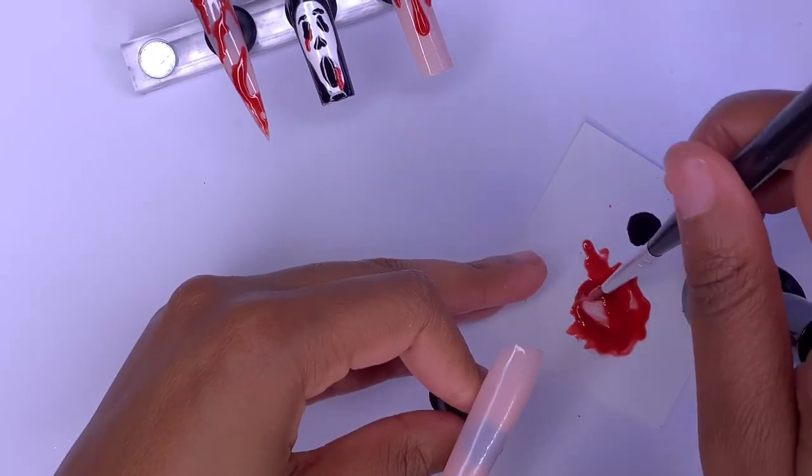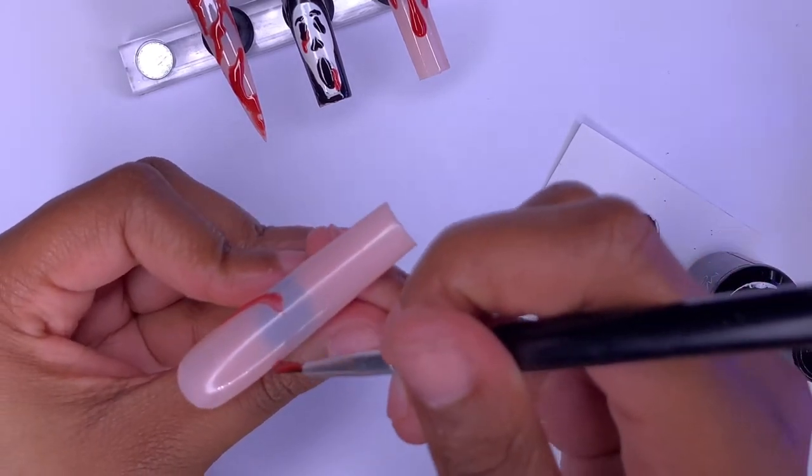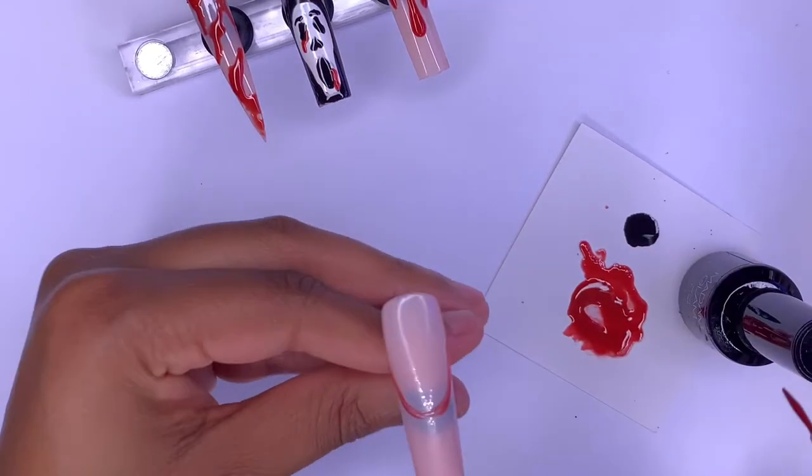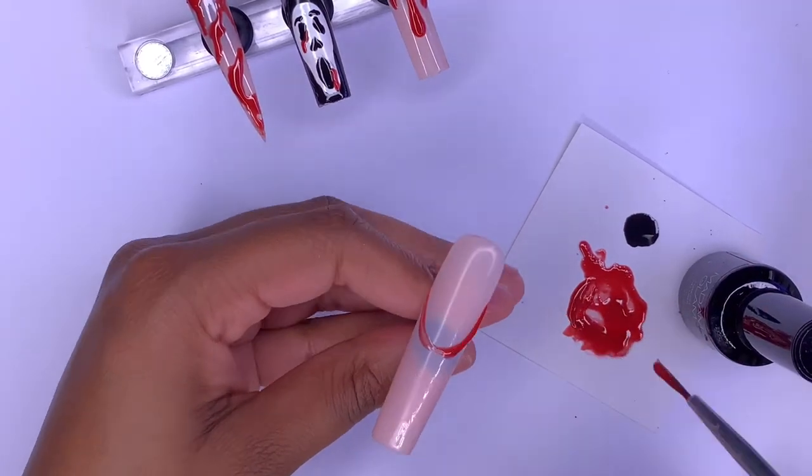I wasn't sure what I wanted to do on the thumb but in the end I decided to just do the same design that I did on the ring finger. So I'm going in and doing the blood drip French tip. Once I'm done, I just went ahead and cured those nails in the lamp and I went in with some top coat.